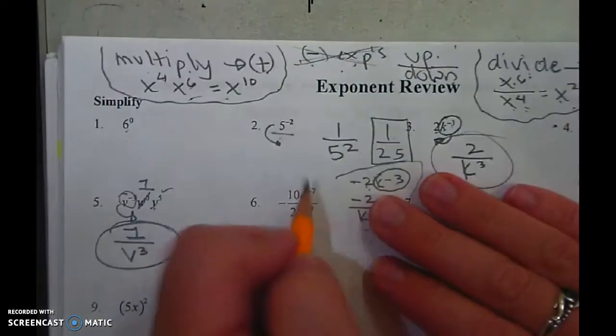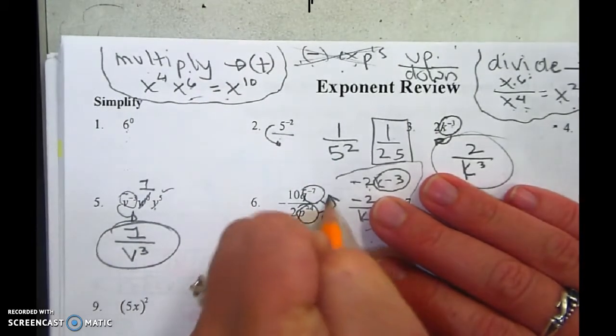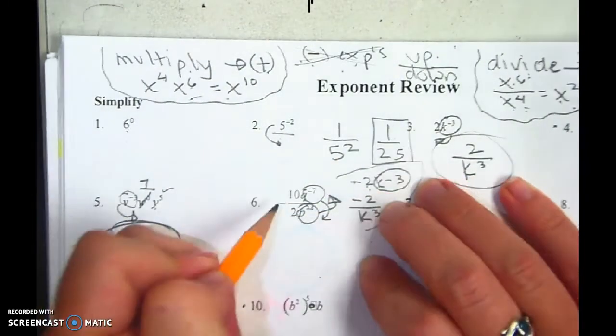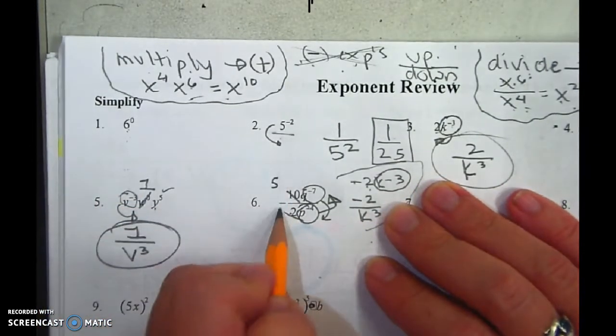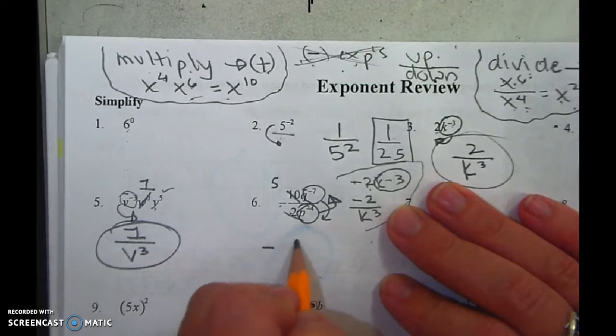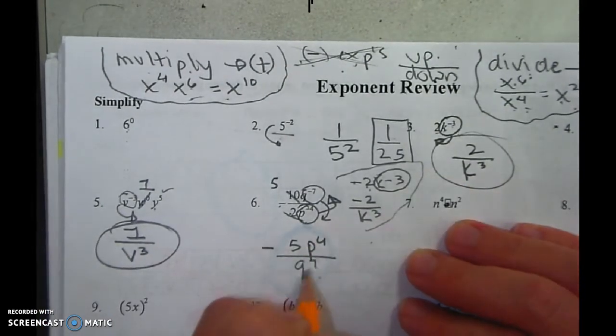This one. Negative on top goes to the bottom. Negative on bottom goes to the top. Then I see 10 does divide by 2, and it divides 5 times. And I have to keep the negative, so negative 5. The p went on top and the q went on bottom.